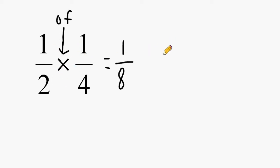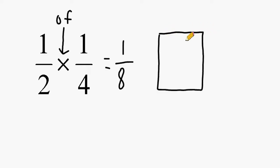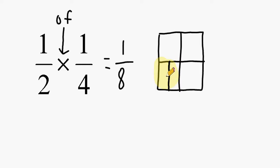We can demonstrate this by drawing a fraction model representing 1 fourth. We cut the whole into quarters, and one of those sections represents 1 quarter. We want to ask: what would be 1 half of 1 quarter? We take that 1 quarter and break it in half. Relative to the entire whole, if we draw sections the same size as what we shaded, the whole is broken into eighths — and that shaded section represents 1 eighth. So half of this quarter represents 1 eighth of the total.